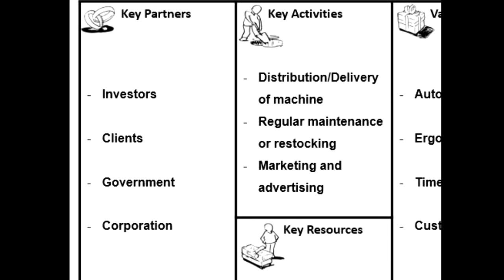Next, I will explain key partnerships — basically the relationships we have with other businesses, governmental, or non-consumer entities that help the business model work. As you can see, the key partners for our business model are: investors, to help build the company from scratch; clients, to help grow the company by buying the machine; governments; and other corporations, to help with the supply of parts to build the machine.